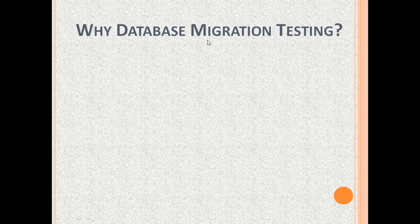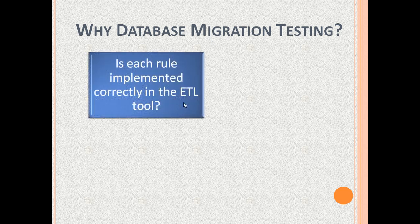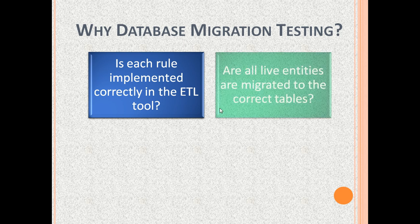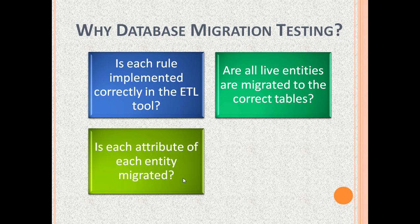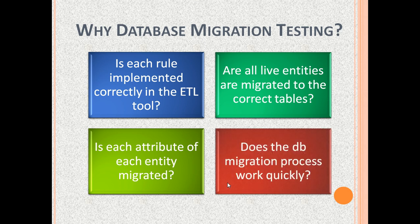Next, why do we do database migration testing? The reasons include checking: Is each business rule implemented correctly in the ETL tool? Are all live entities — meaning not expired entities, for example customer records and order records — migrated to the correct tables in the target database? Each live entity should be migrated exactly once. We also need to check whether each attribute of each live entity in the source database is migrated to the target database, and whether the DB migration process works quickly.